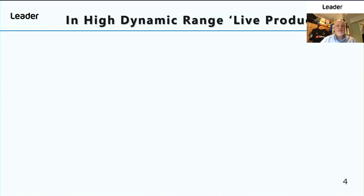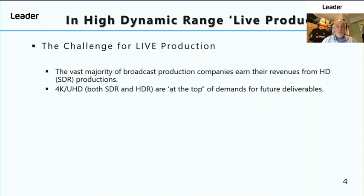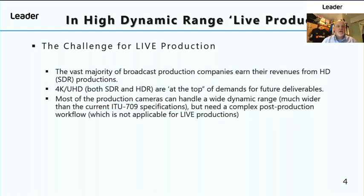Today we're going to talk about the challenges of high dynamic range live production. The vast majority of broadcast production companies earn their revenues from HD-SDR productions. However, 4K UHD in both standard dynamic range and high dynamic range are at the top of the demands for future deliverables. Most production cameras can handle wide dynamic range, much wider than the current ITU 709 specification, but need a complex post-production workflow which is not applicable for live production.